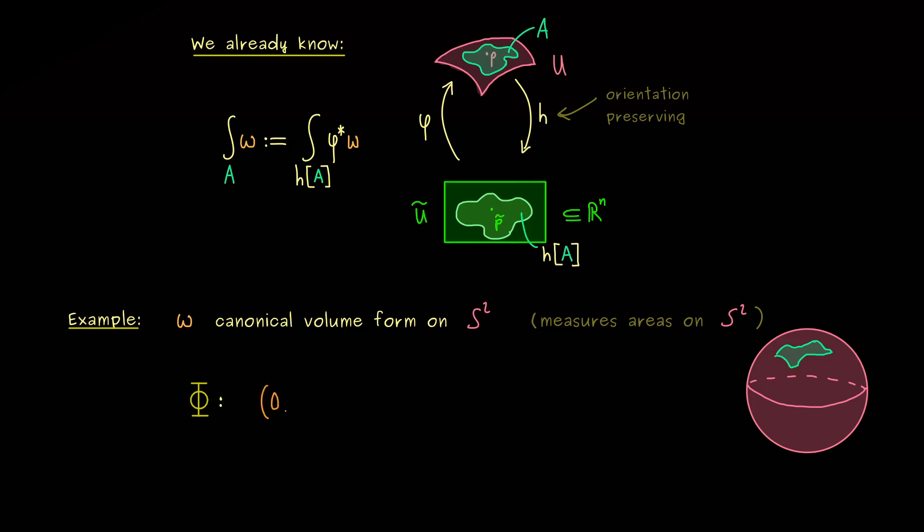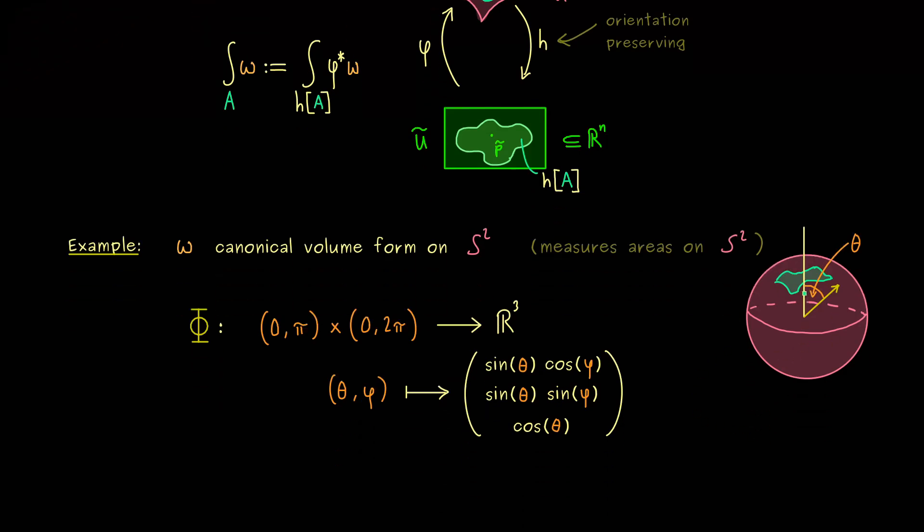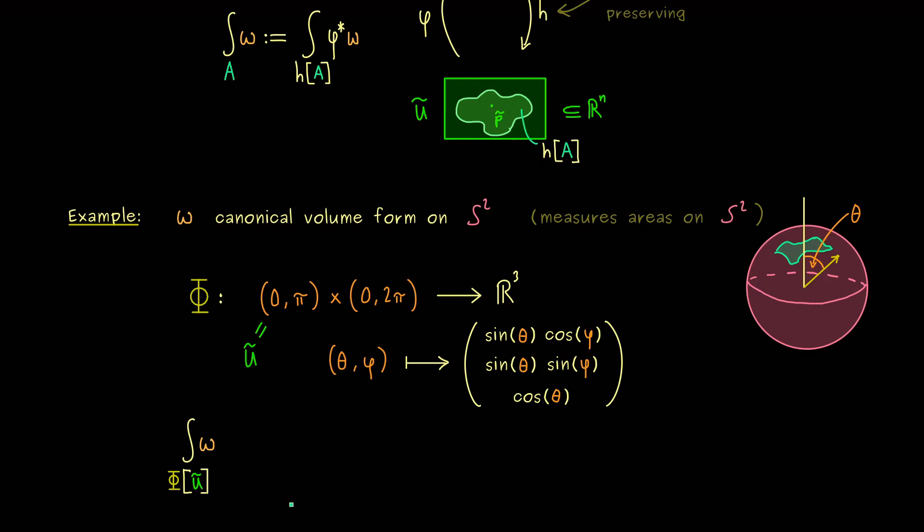The second angle goes from 0 to 2π. The first one we call usually theta and the second one phi. We map them to R^3 to describe our sphere S^2. We have already discussed that in former videos. You know that we need the cosine and sine functions. More precisely, we have sine theta in the first two components and cosine theta in the last component. This means that theta describes the angle coming from the north pole. Moreover, phi is the angle of rotation in the xy-plane. Our open domain u tilde is on the left-hand side. We want to integrate on S^2, which means we need the image of u tilde under phi, so we just integrate over u tilde.